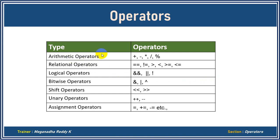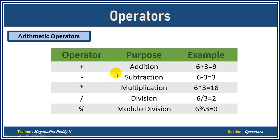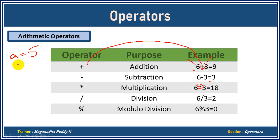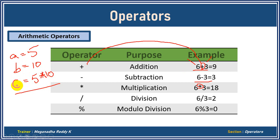First we'll start with arithmetic operators. Plus is used for addition — so 6 plus 3 gives 9. Minus is the subtraction operator. For multiplication we use star. So if you have A equal to 5 and B equal to 10 and want to multiply and store in C, in Java you don't write 5 into 10 — that will give an error. You must write 5 star 10. Let's go to Eclipse IDE and see a simple program.